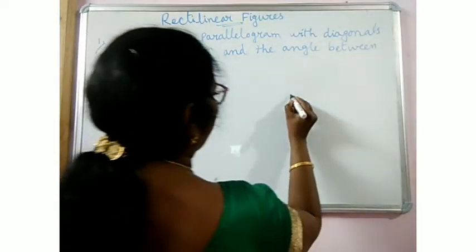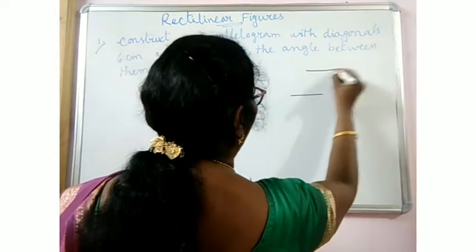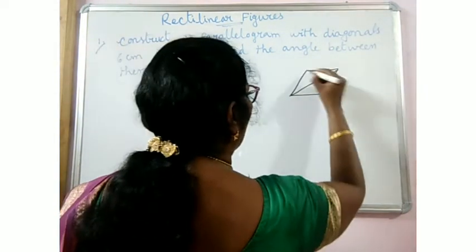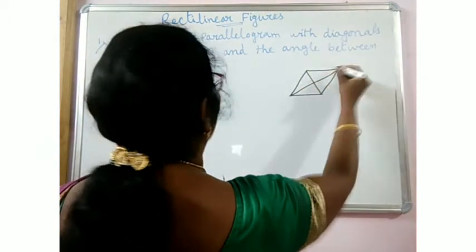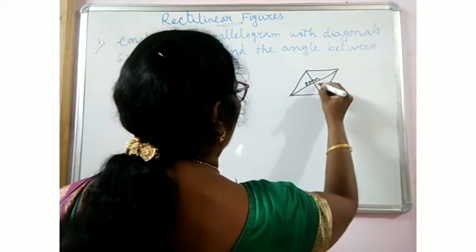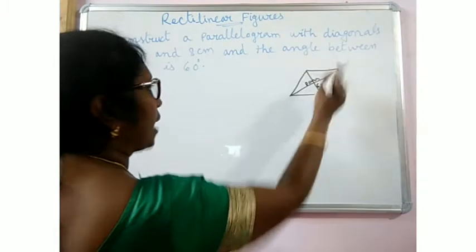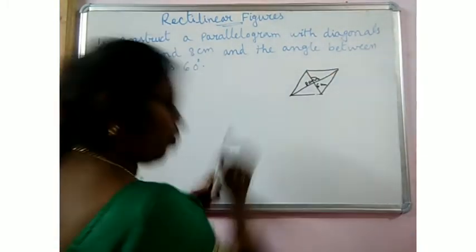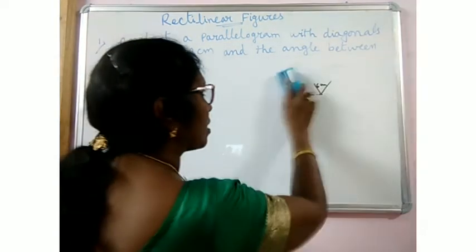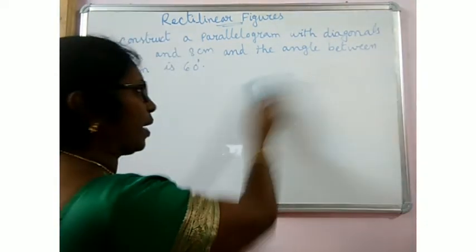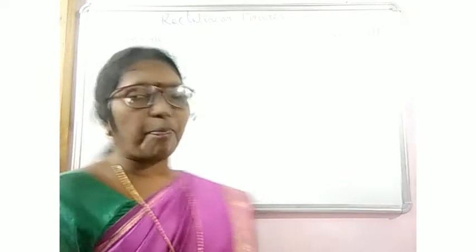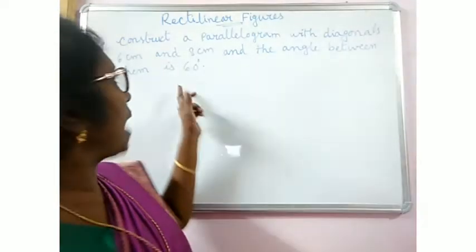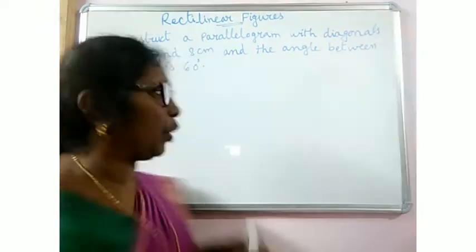First, before doing that, just try to understand. If it is a parallelogram, the two diagonals are given — this one is 8cm, this is 6cm, and the angle between them is given as 60 degrees. You know that in a parallelogram the diagonals bisect each other, and the angle between the diagonals is given to you.